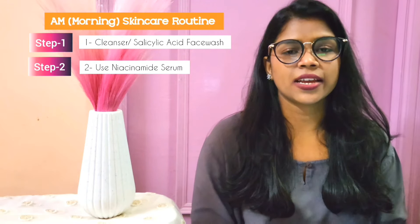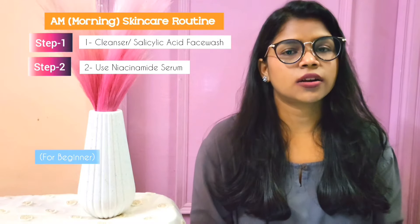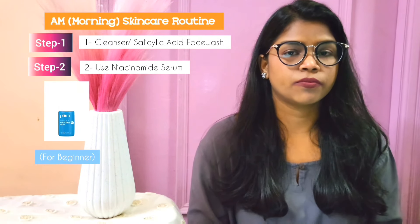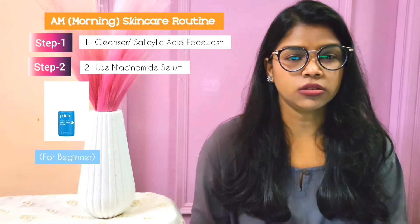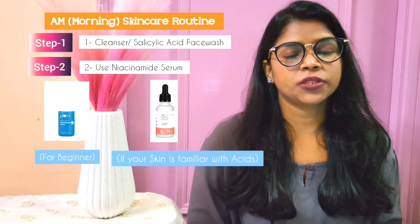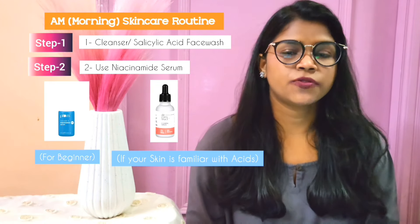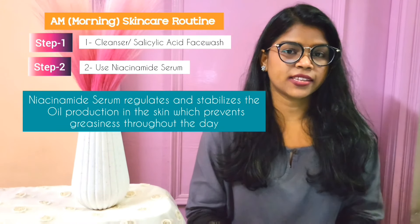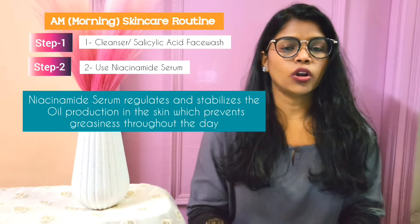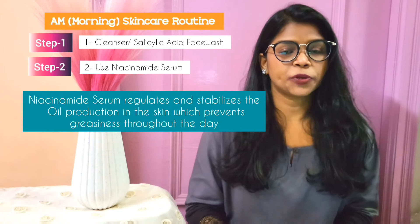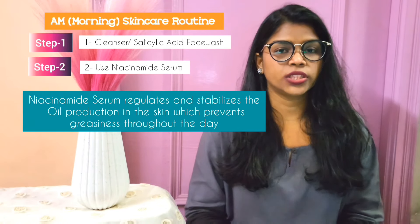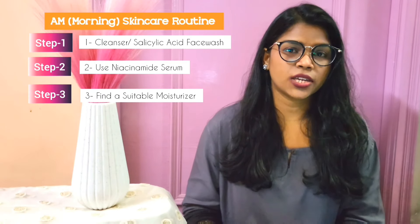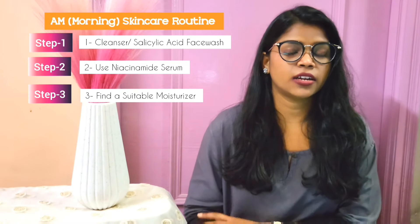Step two: use a serum. You can choose a niacinamide-based serum. If you are a beginner, use a 5% niacinamide serum with rice water. Number two is a 2% alpha arbutin plus 5% niacinamide serum. Niacinamide serum regulates and stabilizes oil production in the skin, which prevents greasiness throughout the day.